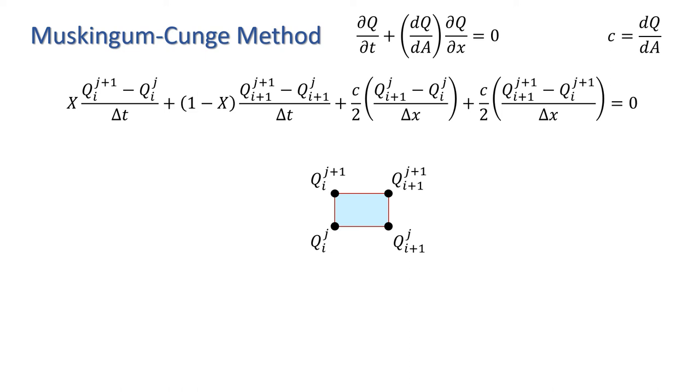In practice, the flood wave celerity c is often derived by establishing empirically a power law relationship between q and A for the river in question, of the form q equals alpha·A to the m, where alpha is a constant. In which case, we have dq by dA equals m·alpha·A to the (m minus 1), which is just mq over A.